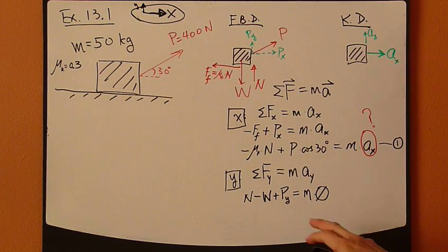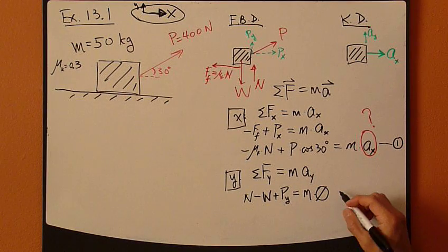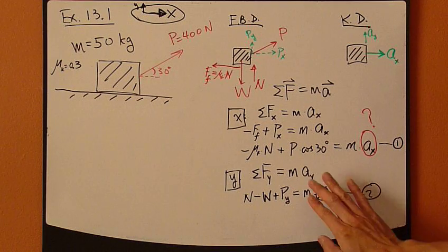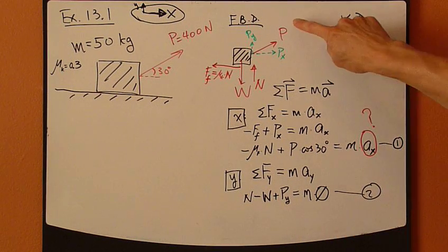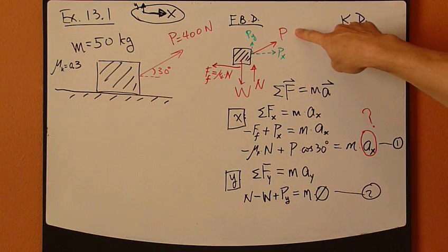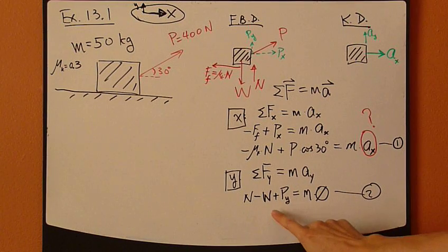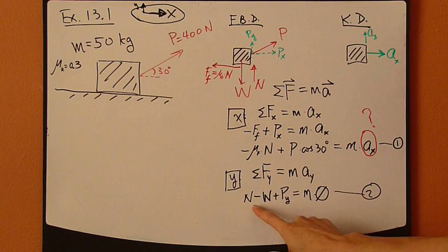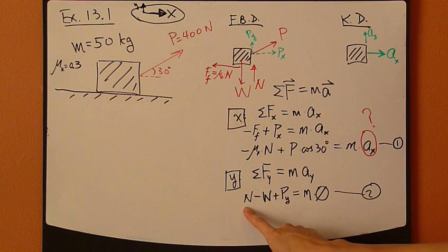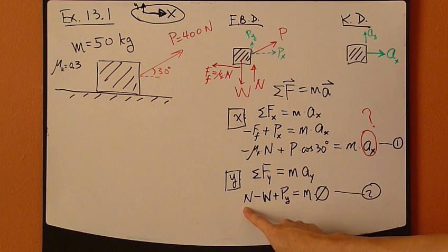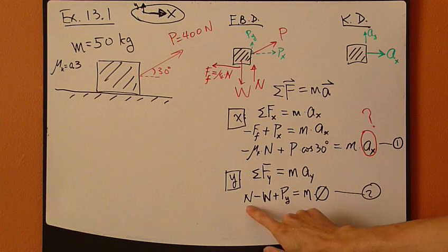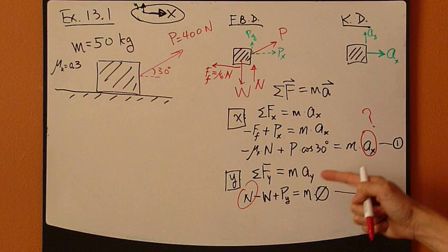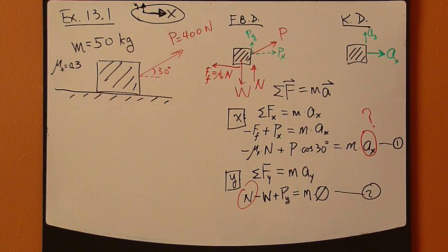So, from this equation, equation two right here. Right-hand side is zero. P_y is given. P is given, so you know p_y is just sine of 30. Weight, you know, mass is given. So, here, the unknown is n, the normal force. So, solve for normal force here, and plug it back into equation one. So, let's do that.